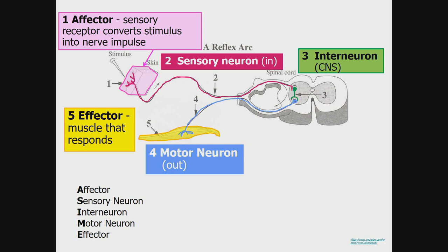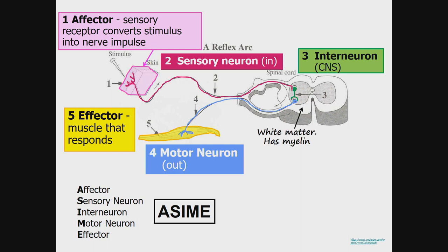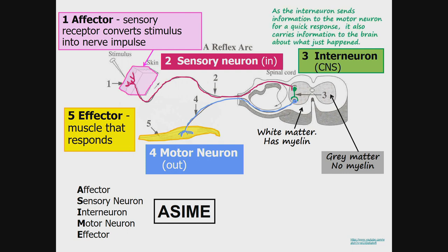The order is receptor, sensory neuron, interneuron, motor neuron, and effector — which spells ASIME. In the spinal cord, white matter has myelin and grey matter has no myelin. As the interneuron sends information to the motor neuron for a quick response, it also carries information to the brain about what just happened.